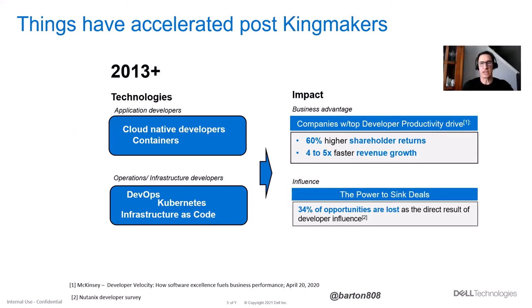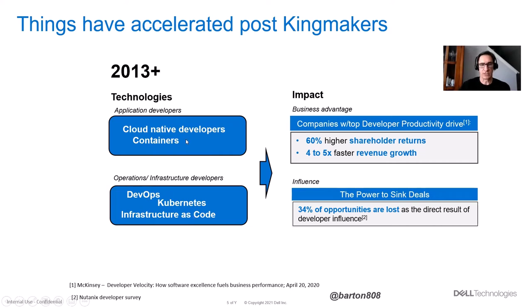2013 is when Stephen's book ended, and things have only accelerated since then — developers' influence has continued to climb. The technologies that have led to this accelerated influence are cloud native technology, containers, DevOps, Kubernetes, and infrastructure as code. Many of these were around in 2013 but really came to the fore over the last five years. This has helped application developers, and also operations, whose goal is to support developers and their productivity.